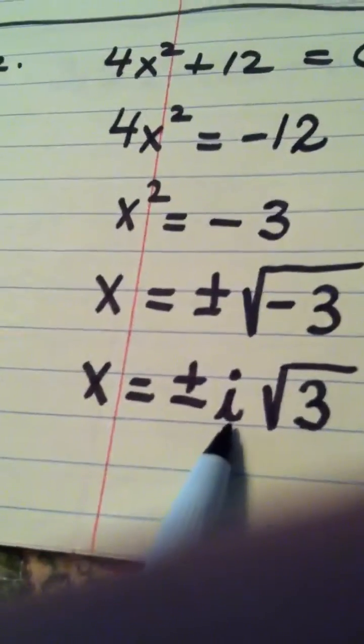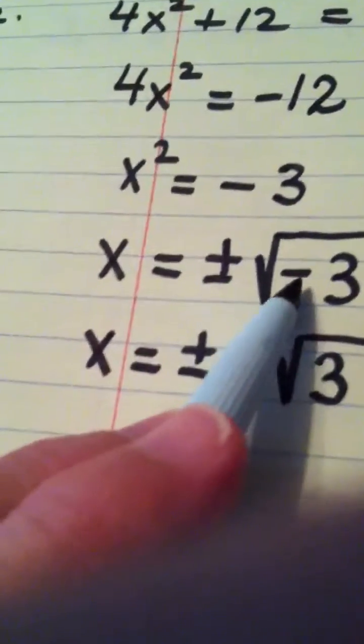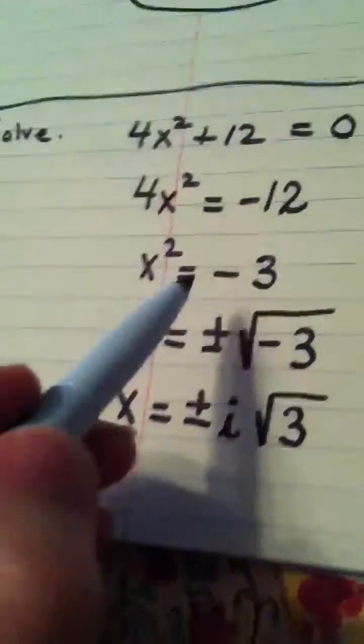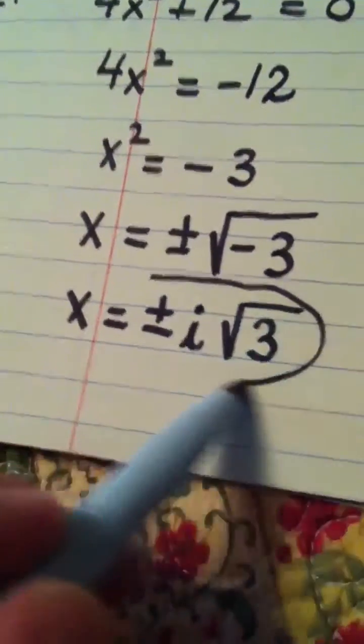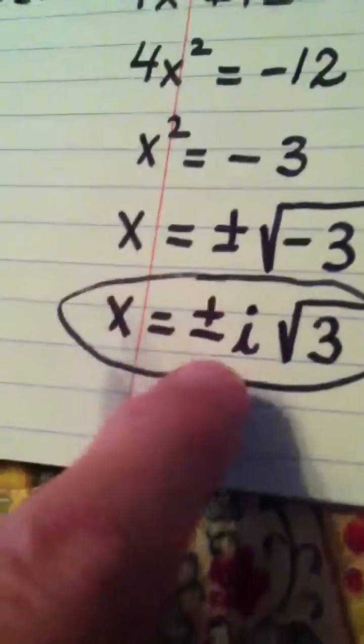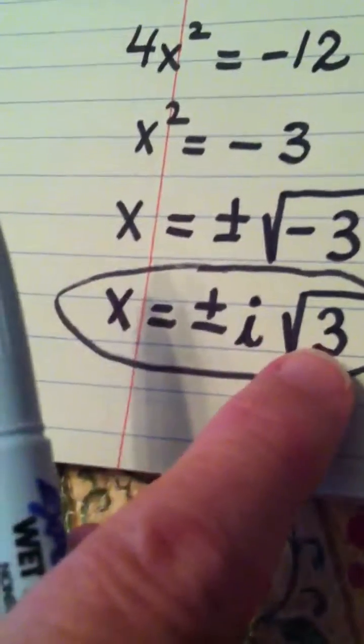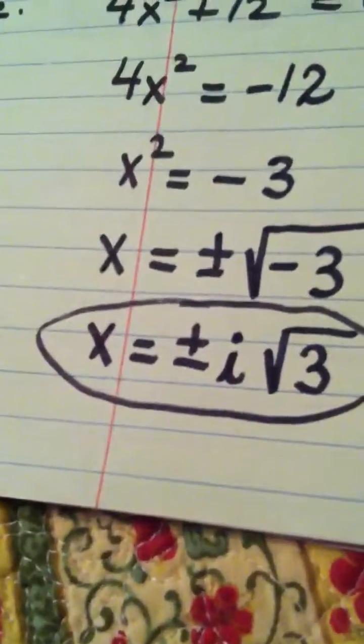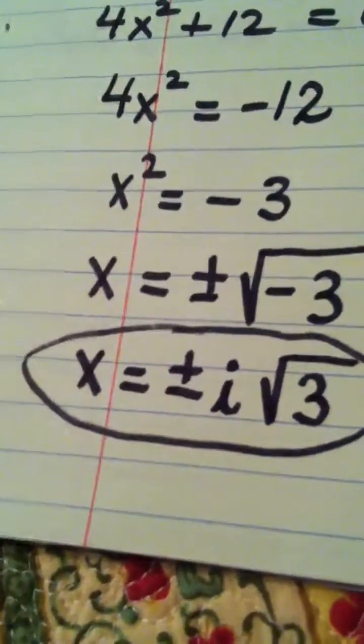But you did put an i in the problem because the square root of a negative is always going to generate the answer i. And this problem has no real solutions because its solutions are i root 3 and negative i root 3. And we're done. Thank you.